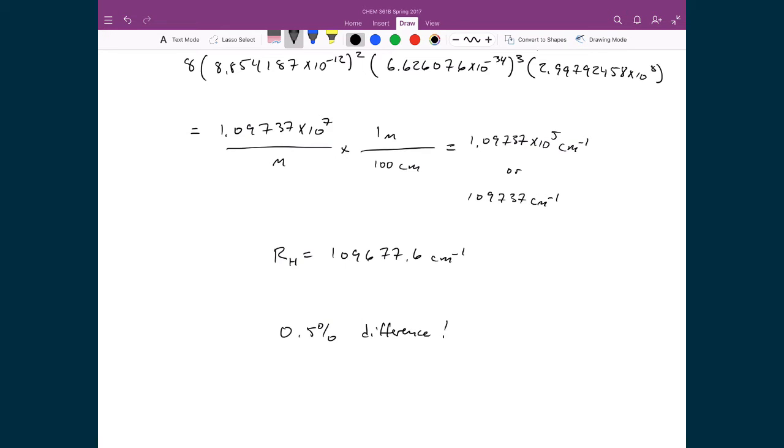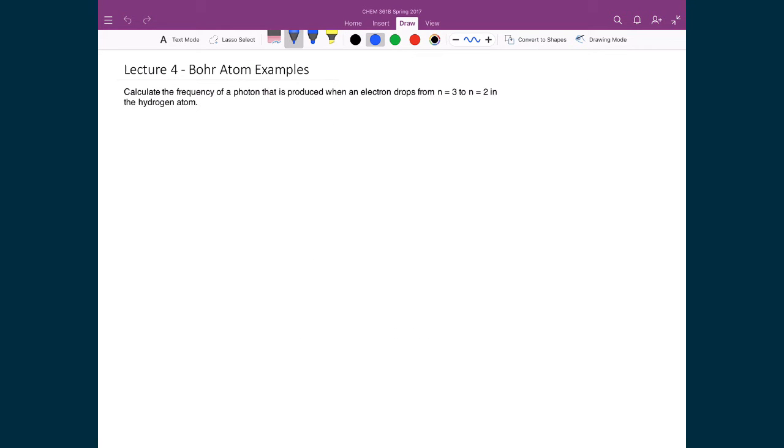And so this was an amazing result because what it showed Bohr was that he had a model of an atom that finally represented what was actually there in reality. So now let's look at a concrete example using now what we know from the Bohr model of the atom.